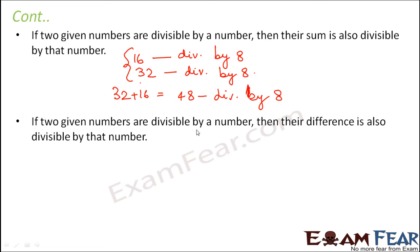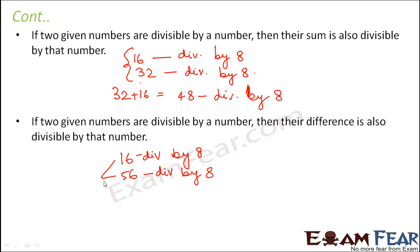Rule number 4: if two given numbers are divisible by a number, then their difference is also divisible by that number. For example, 16 is divisible by 8, and 56 is also divisible by 8. The difference between 56 and 16 is 40, and 40 is also divisible by 8. So the sum and the difference of two numbers that share a common divisor are also divisible by that same number.